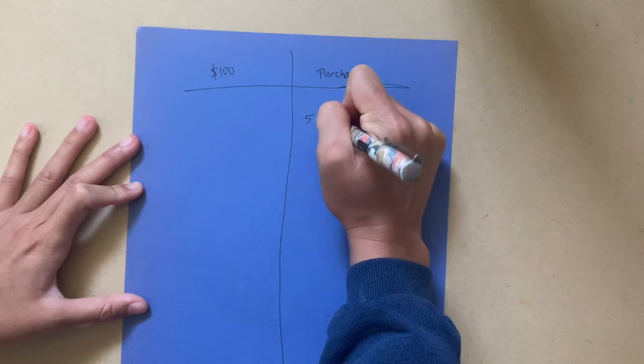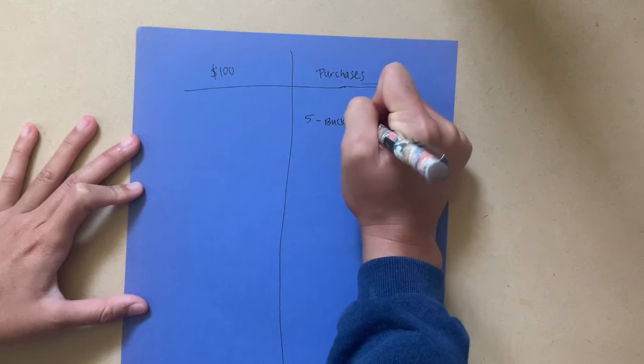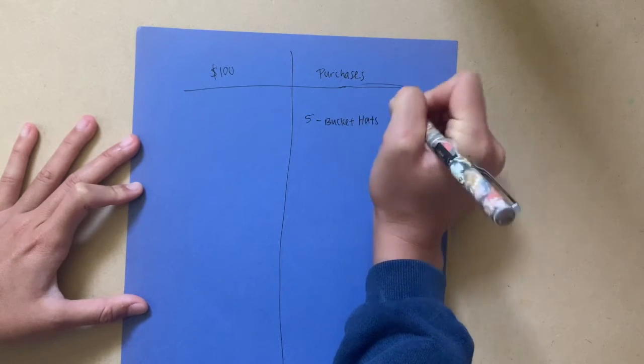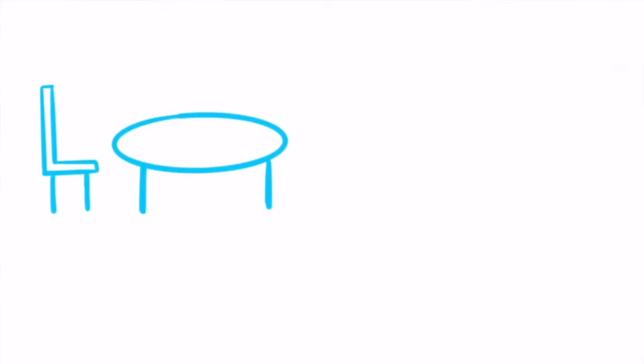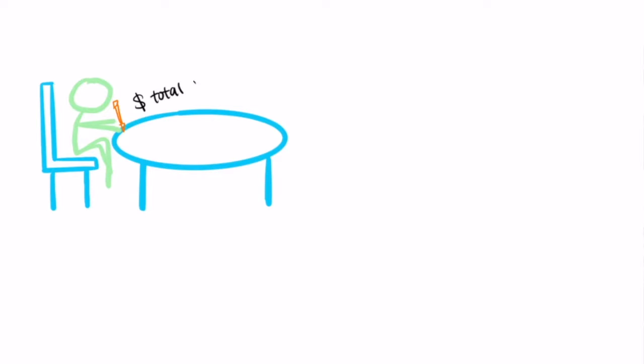Here, if I buy five bucket hats, then I would write 5 bucket hats $5.49 each. When you are finished with your first round of purchases, return to your receipts to calculate the total cost. Do this by first adding up the total cost of each item and then subtracting that amount from the given budget, $100.